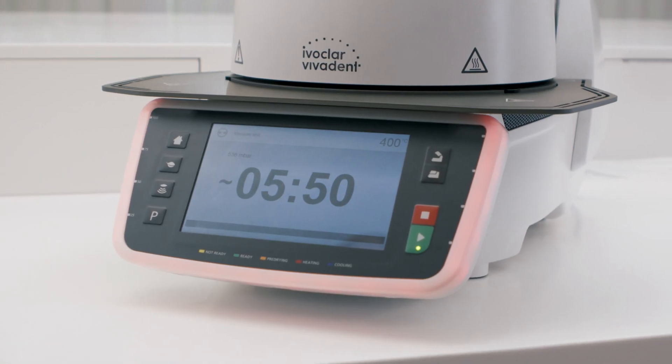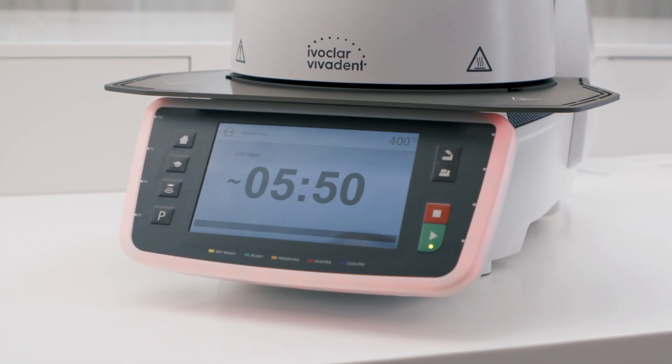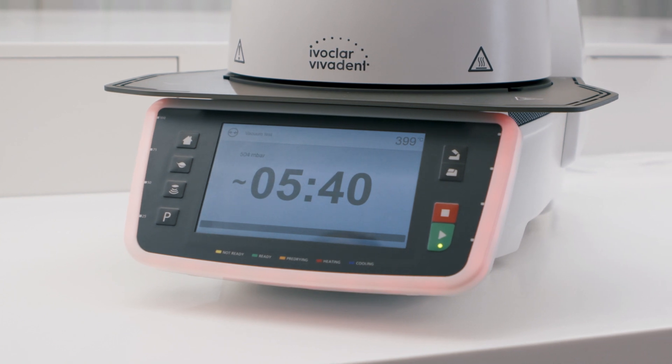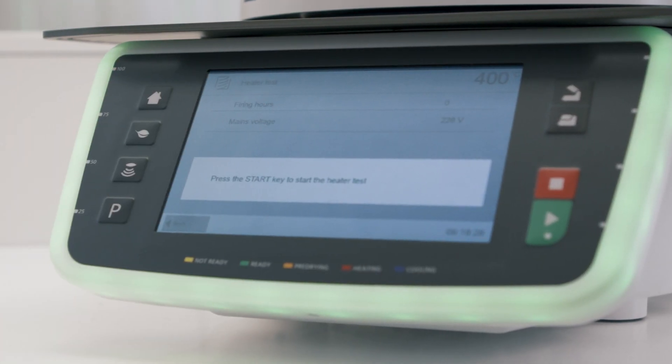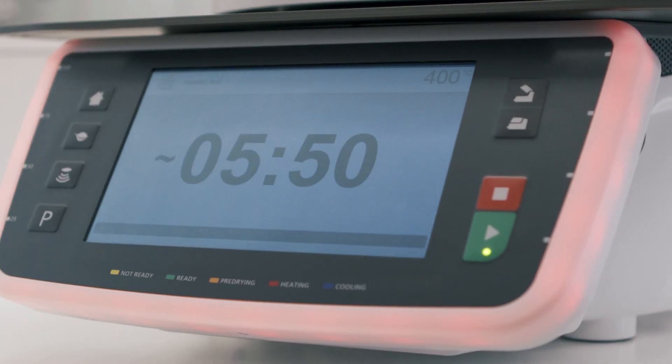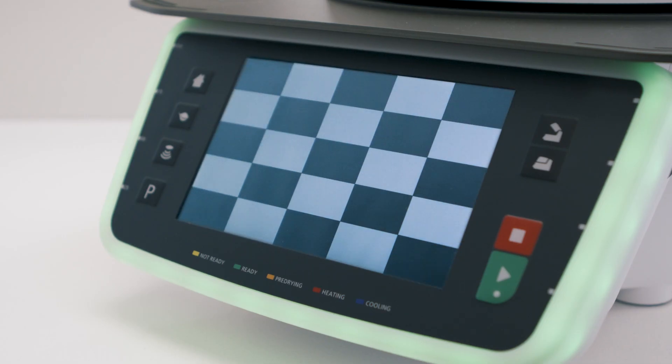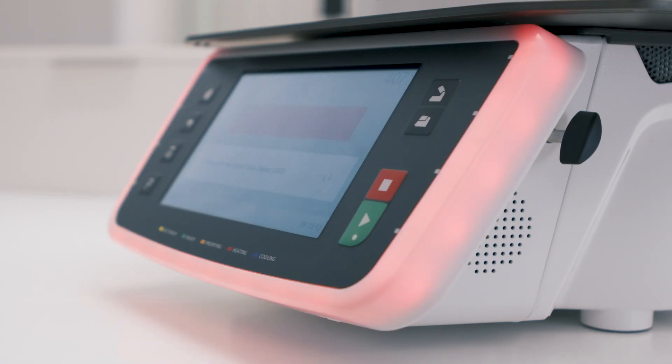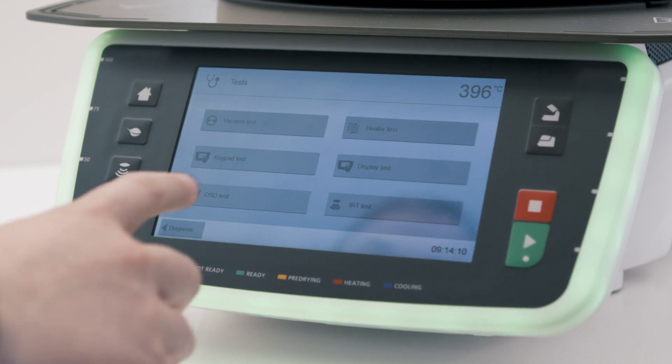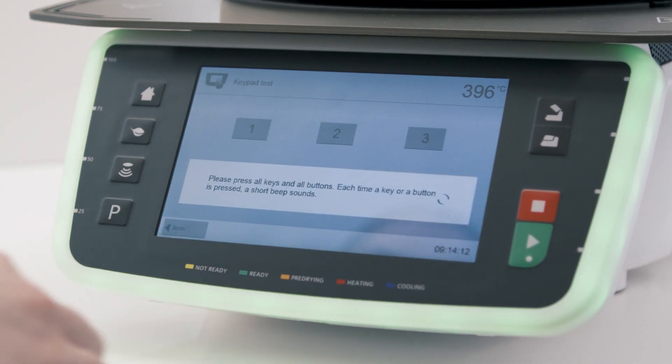The vacuum test verifies the performance and tightness of the vacuum system. The heating test examines the quality of the heating muffle. The display test searches for pixel errors and the OSD test checks the optical status display. The keypad test checks the functionality of the touch screen and the keypad.